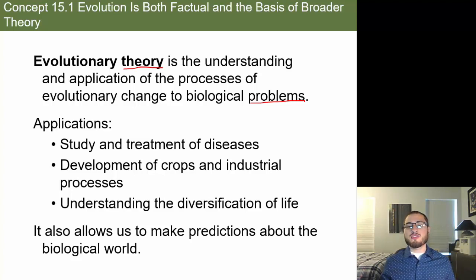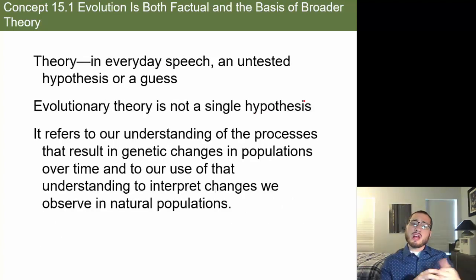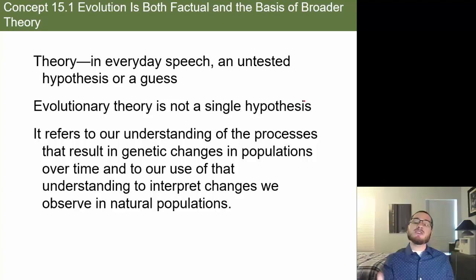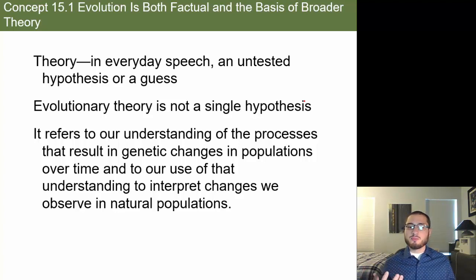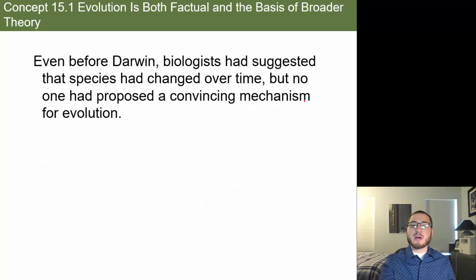Evolutionary theory also allows us to make predictions about the biological world and how we are influencing it. When you hear about climate change, people ask how it will affect organisms here today. In everyday speech, 'theory' is an untested hypothesis or guess, but in science it refers to our understanding of a process that results in genetic changes over a long period of time and how we use that to interpret changes in natural populations.